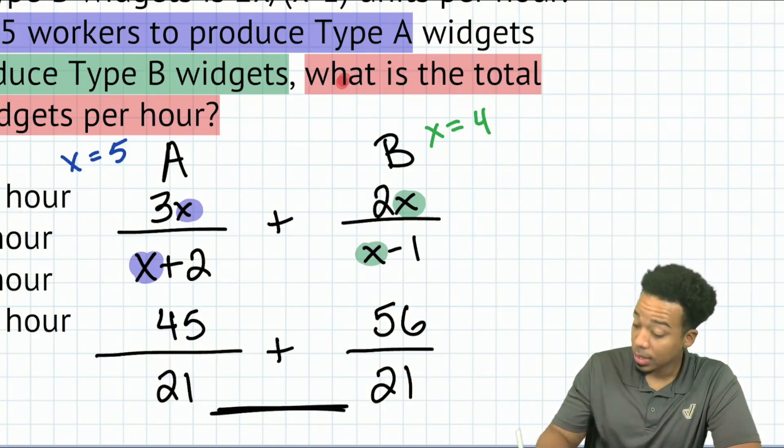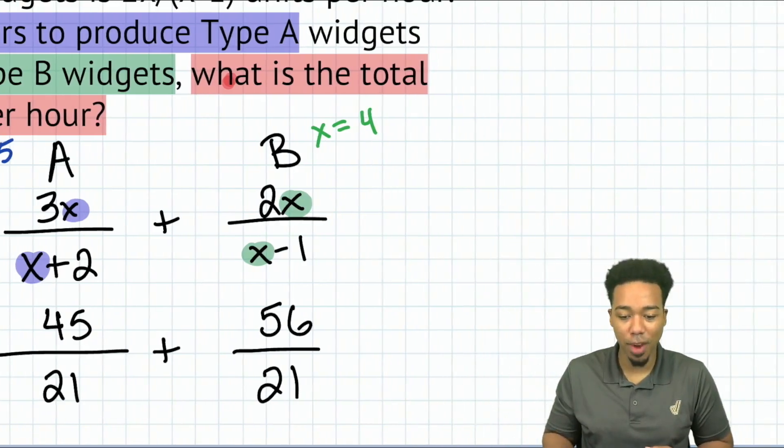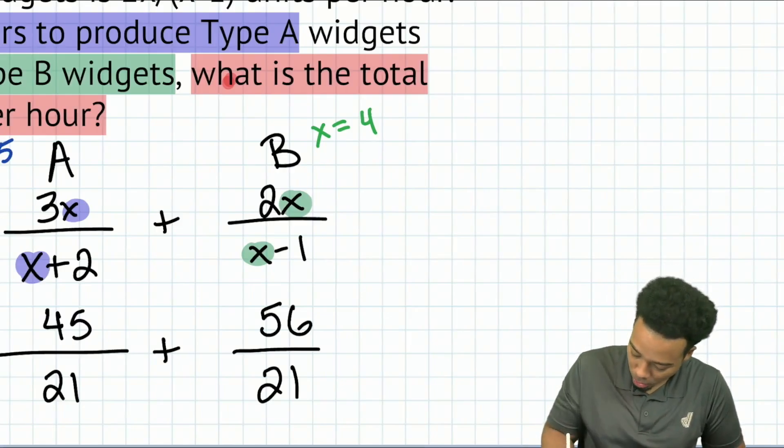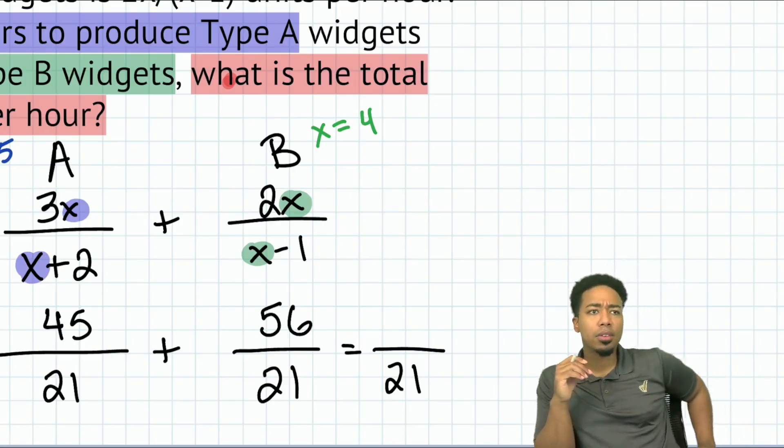Again, as expected, because we want the same denominator. So now that we're here, we can add these two fractions together. So we will go ahead and write this as a denominator of 21. What is 45 plus 56?